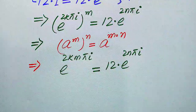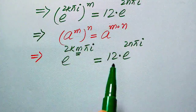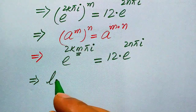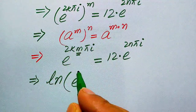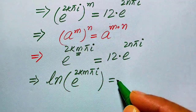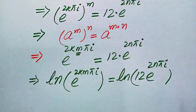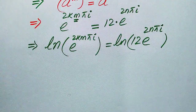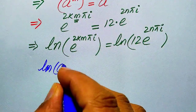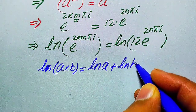Our target is to find the value of m. Since this is an exponential equation, we take the log on both sides. After applying the log, it becomes: log of e to the power of 2km·π·i equals log of 12 times e to the power of 2n·π·i.